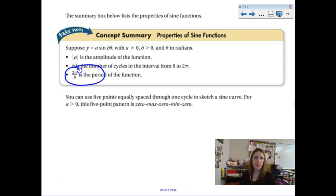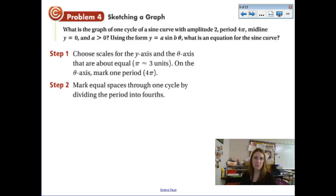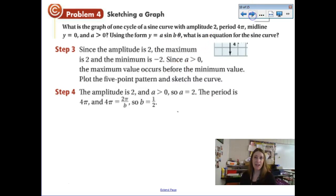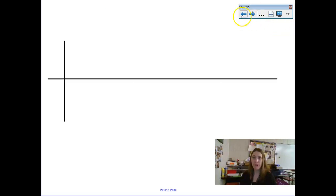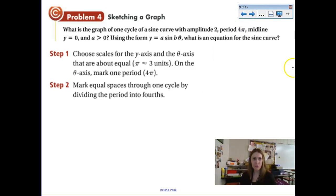Here's the formula for finding the period and the true definition of B. B tells you how many cycles will be between 0 and 2π. So if you're looking at a graph and your job is to find the value of B, that's the easier way to think about it. We are going to be graphing a sine curve with an amplitude of 2 and a period of 4π and a midline at 0.